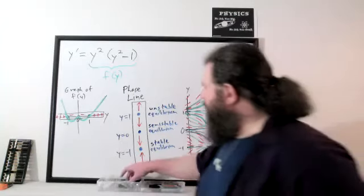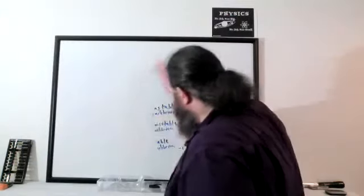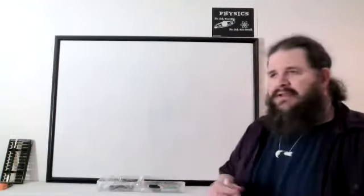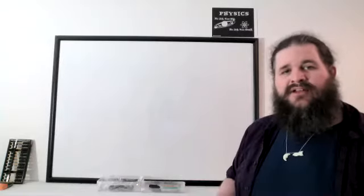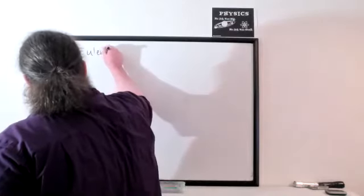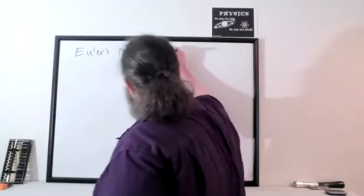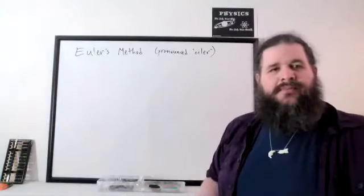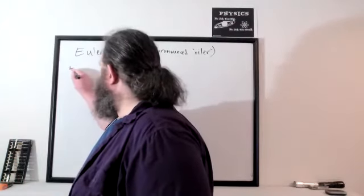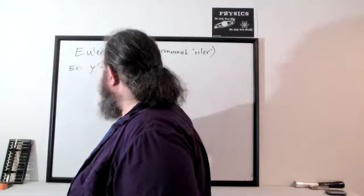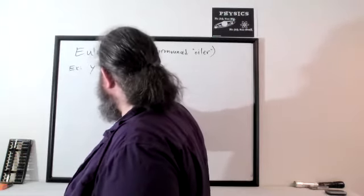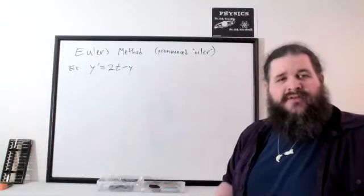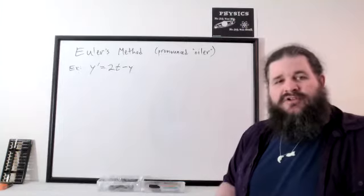Now let's look at Euler's method. Euler's method is a way to approximate solutions of differential equations, even when they can't be solved analytically, by extending the idea of the direction field to algebra instead of geometry. As an example, let's use y prime equals 2t minus y. Since this is linear, we could solve it analytically, but let's explore how to approximate the solution using Euler's method.